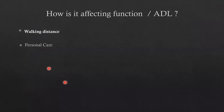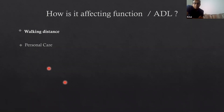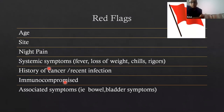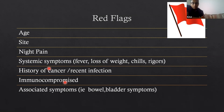It is important to know how symptoms affect function and activities of daily living. Ask about walking distance. The red flags to always cover include: age less than 20 or more than 65, thoracic pain, night pain, systemic symptoms such as fever, weight loss, chills and rigors, any history of cancer or recent infection, immunocompromised status including steroid use or diabetes, and bowel and bladder symptoms which may point towards cauda equina syndrome or spinal cord compression.